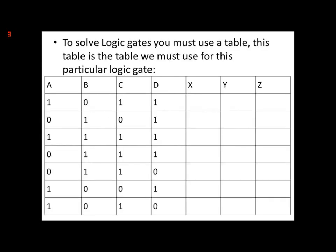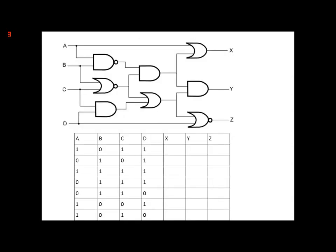To solve this logic gate you must use a table. This is the table we must use for this particular logic gate. In order to use the logic gate, what you've got to do is find out what X, Y and Z are using the variables A, B, C and D. So we can use these and substitute these into the equation.